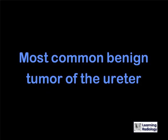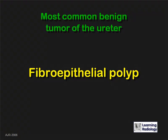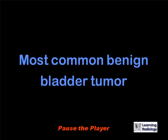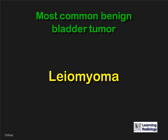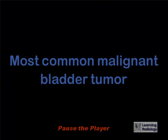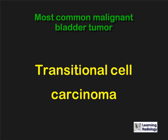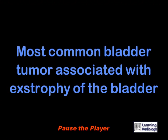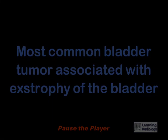What is the most common benign tumor of the ureter? A fibroepithelial polyp. What is the most common benign bladder tumor? A leiomyoma. What is the most common malignant bladder tumor? A transitional cell carcinoma. What is the most common bladder tumor associated with exstrophy of the bladder? An adenocarcinoma.